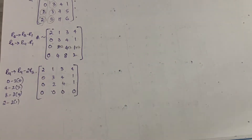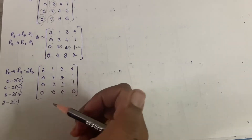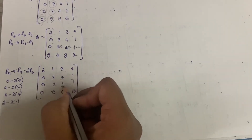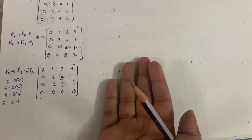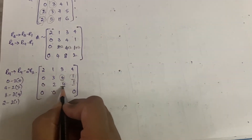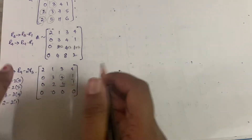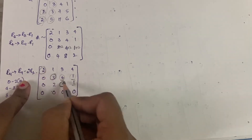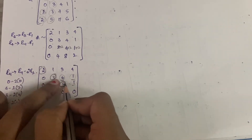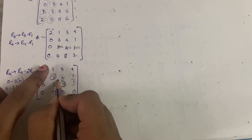Now whatever you find interesting you can work on next. See here in rows 2 and 3 we have 4, 4 and 1, 1 — so you can subtract to make elements zero. But we don't want all of them zero since we need diagonal ones. We should not make row 3 zero, so let us make row 2 a zero row.